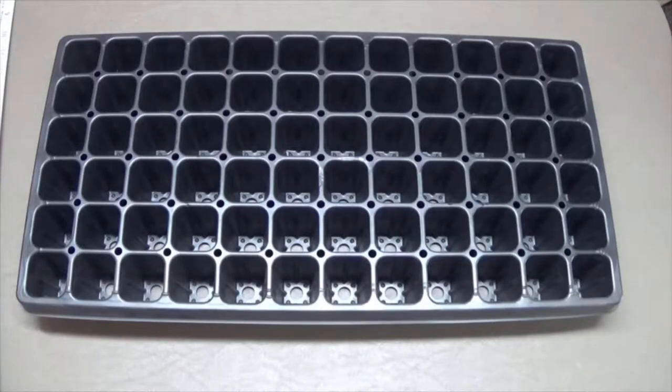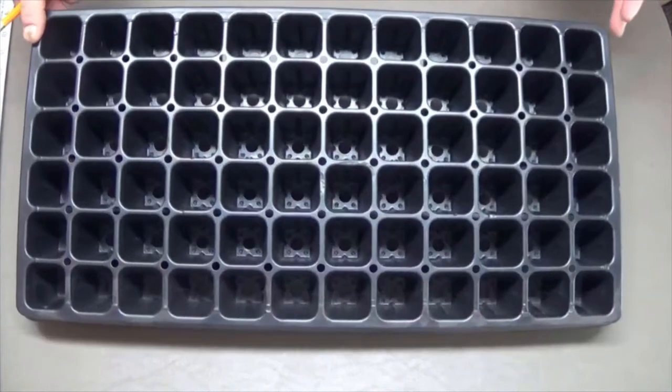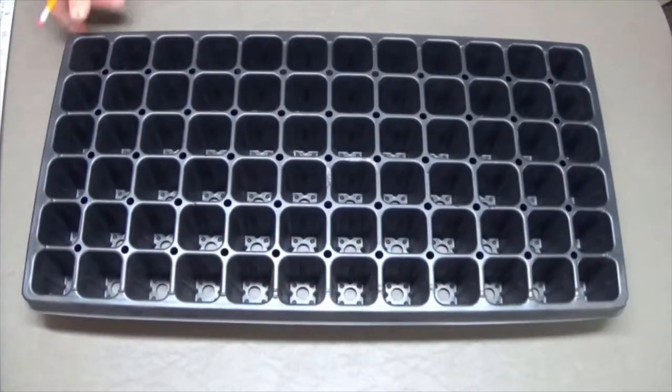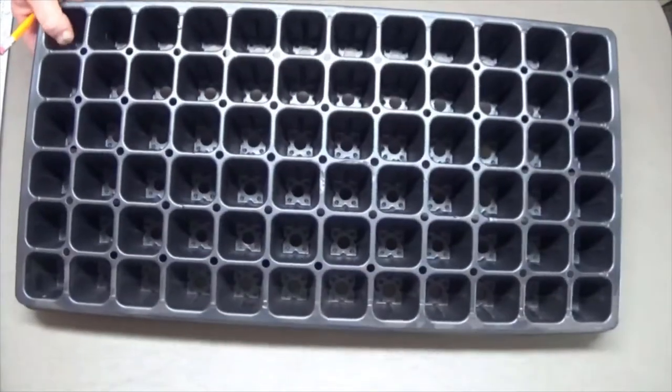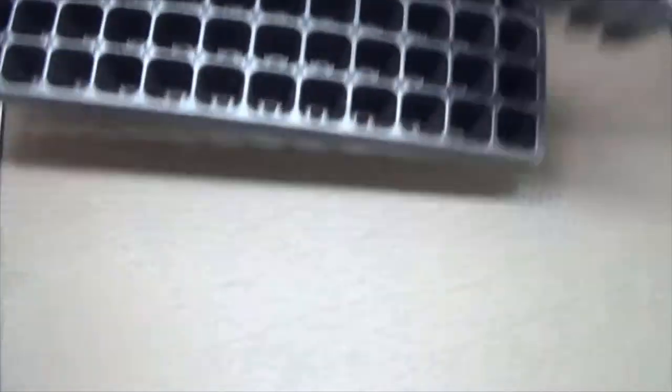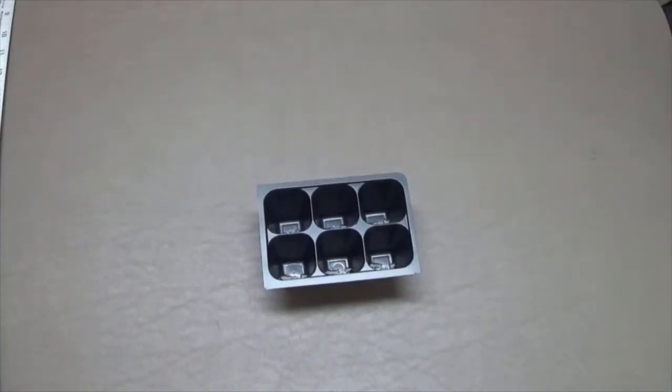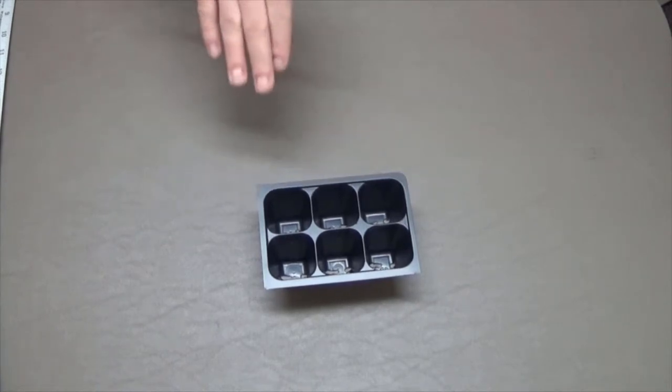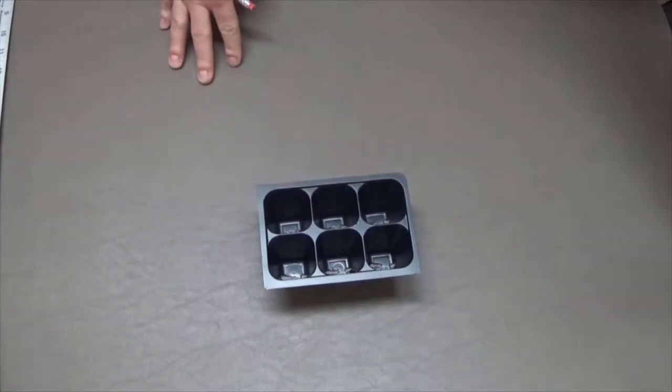You've seen our large press measured out to the 72 cell count where you can make holes for an entire flat, and that makes it really great, simple, and quick. But what happens if you don't have a 72 cell pack that you're planting out and you just have a six cell pack? There's no point in using that entire giant press if you only have six. So that's what we're going to be doing - making a little six pack cell method.